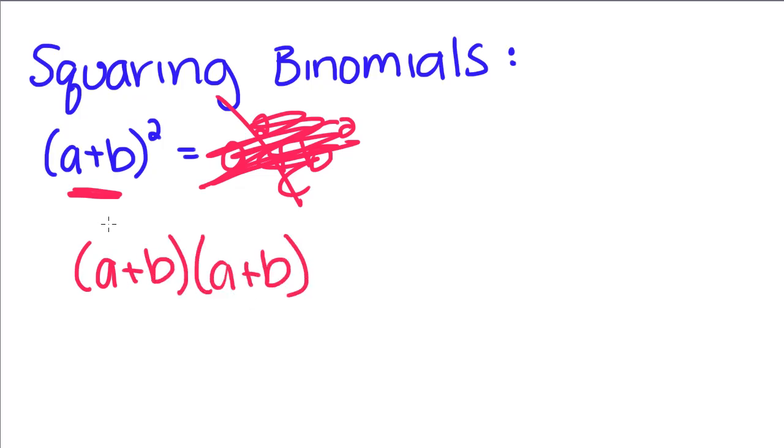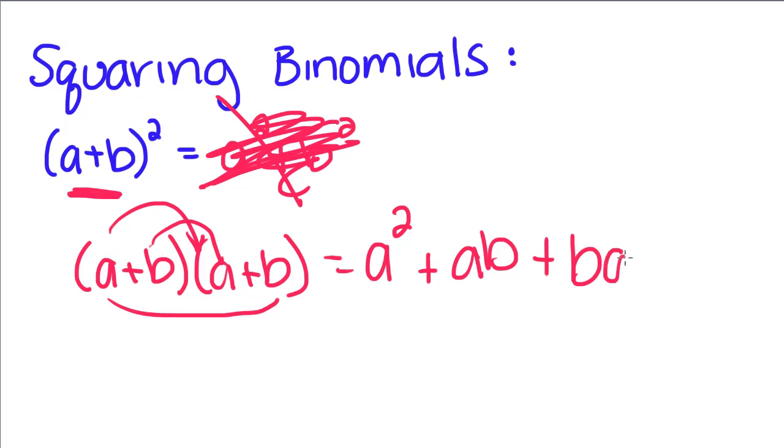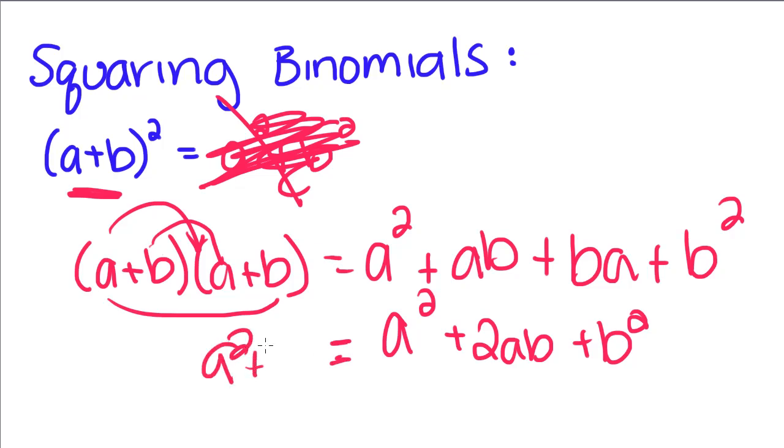And when we FOIL this out, we get a squared plus outer a times b, ab, plus inner ba, plus b squared. So you get a squared plus 2ab plus b squared. And as you can see, this is not the same thing as a squared plus b squared.